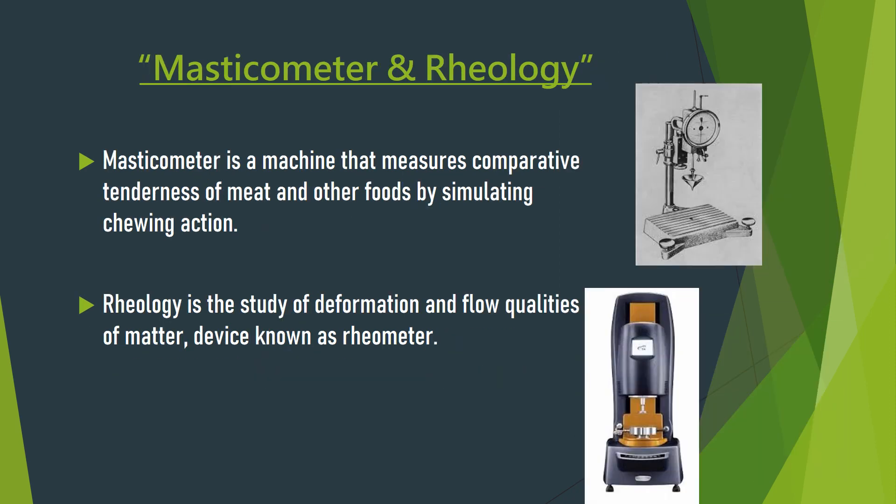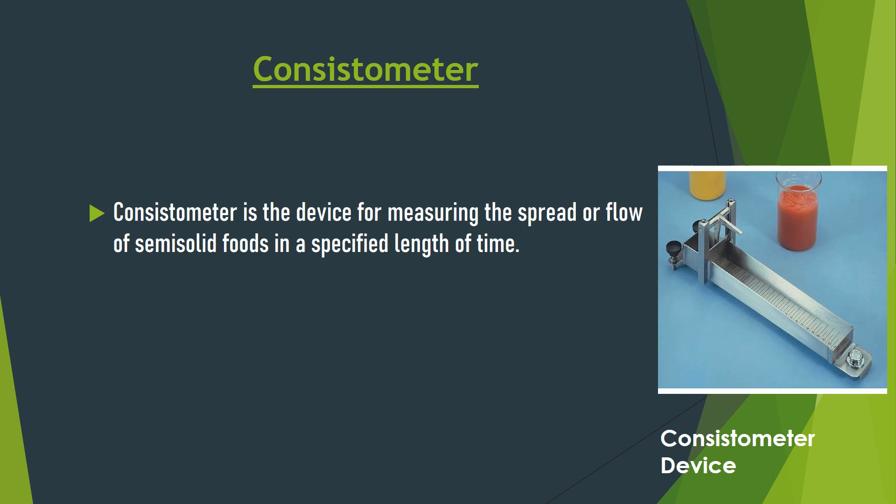The masticometer is a machine that measures the comparative tenderness of meat and other foods by simulating the chewing action. The rheometer is a device used to determine the flow qualities of matter. The consistometer is a device for measuring the spread or flow of semi-solid foods in a specified length of time.